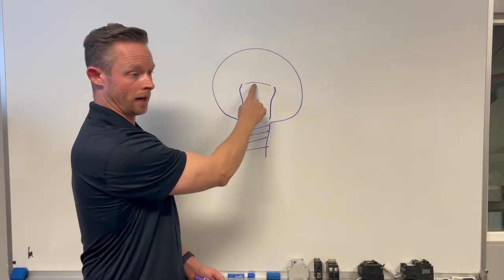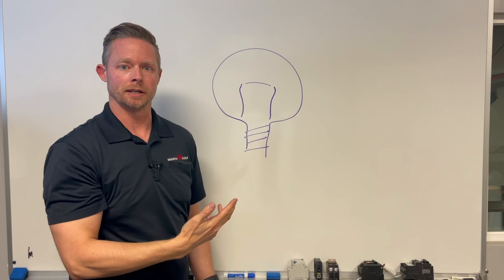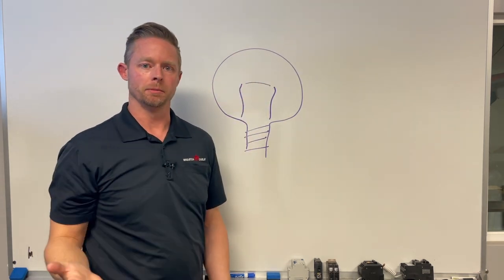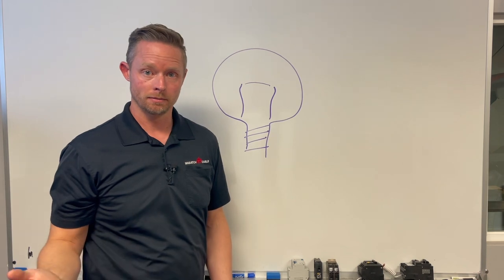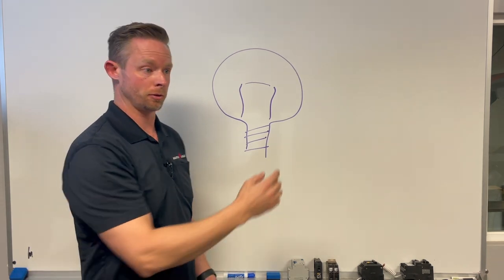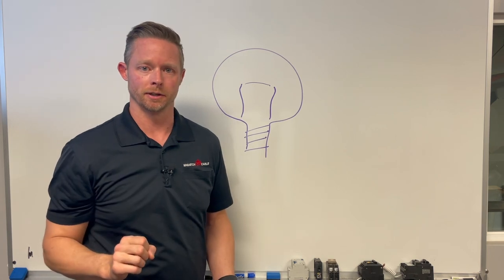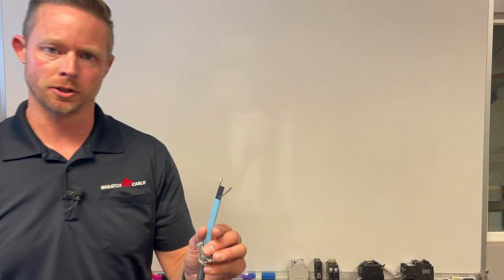It has a filament up in the top and that allows the electricity to pass over and then it glows. Well, if that filament goes away, all of a sudden you have no current running through from your hot over to your neutral. Heat cable is very different. If you've ever cut open self-regulating heat cable, you might recognize some of these parts. Let me show you.